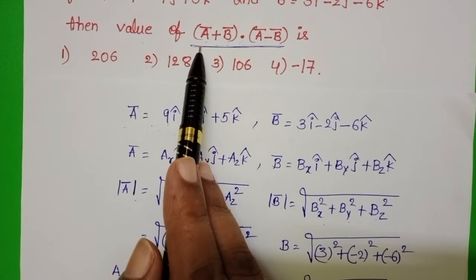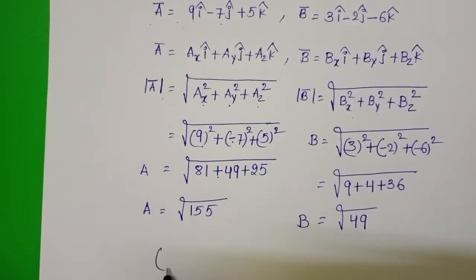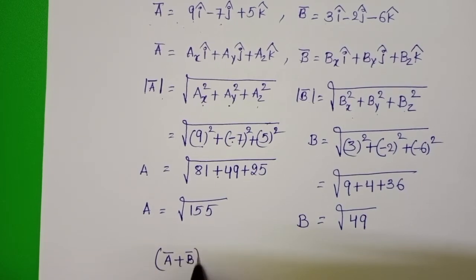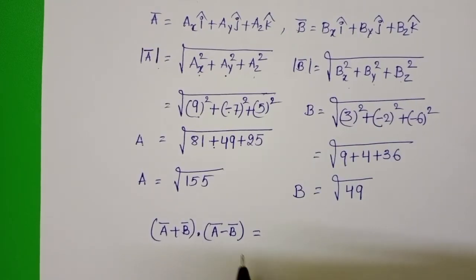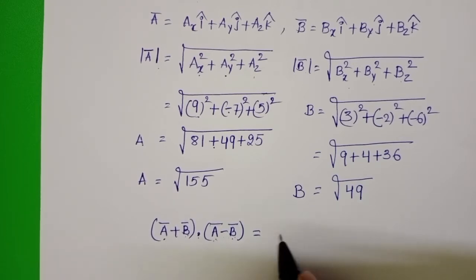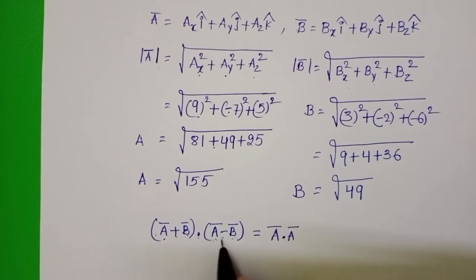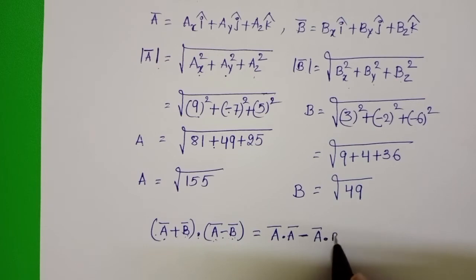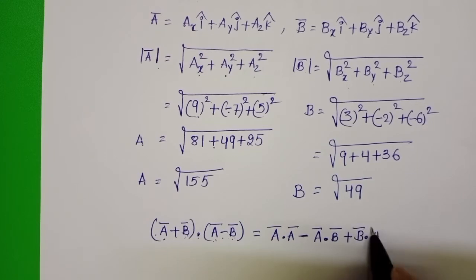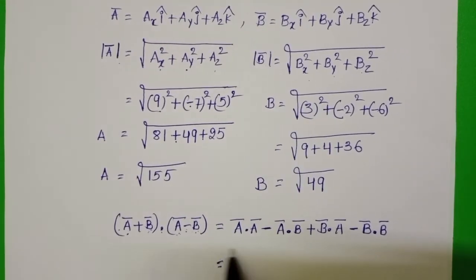Now we have to find (ā + b̄)·(ā − b̄). This is a dot product. First multiply (ā − b̄) with ā, then multiply (ā − b̄) with b̄. This gives: ā·ā, then plus into minus gives minus ā·b̄, then plus b̄·ā, and minus b̄·b̄.